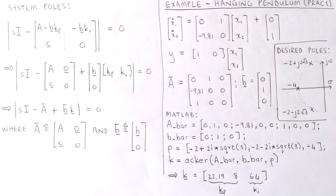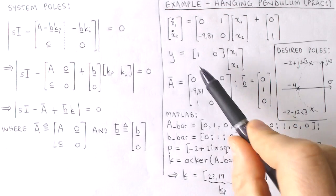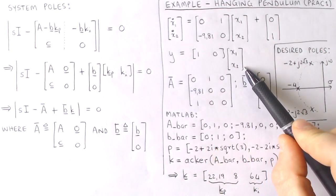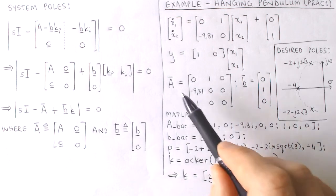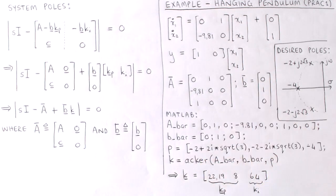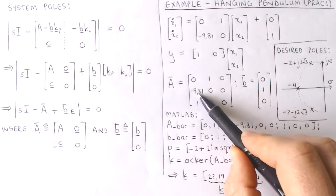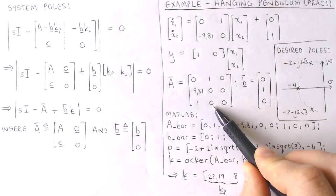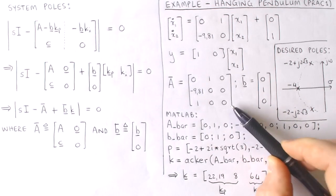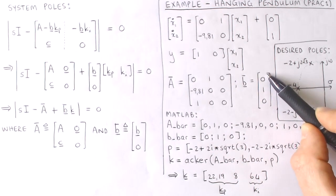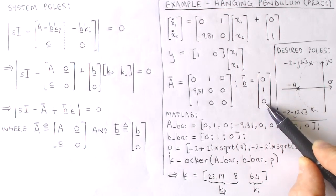To illustrate these concepts, let's look at an example. We use the same hanging pendulum model of previous examples, given by its state equation and output equation. We want to apply integral control to ensure robust steady-state tracking, and we therefore augment the plant model with an integral state. The augmented system matrices are given by A-bar and B-bar. In matrix A-bar, the top-left block is the plant's A matrix, the bottom row contains the plant's C vector, and the last column contains only zeros. The vector B-bar contains the plant's B vector with the last element being zero.